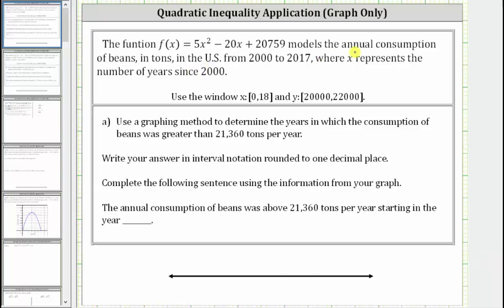The function f of x models the annual consumption of beans in tons in the US from 2000 to 2017, where x represents the number of years since 2000. For part a, we're asked to use a graphing method to determine the years in which the consumption of beans was greater than 21,360 tons per year. We're told to write the answer using interval notation and then complete the sentence below. Let's first graph the function on the graphing calculator.